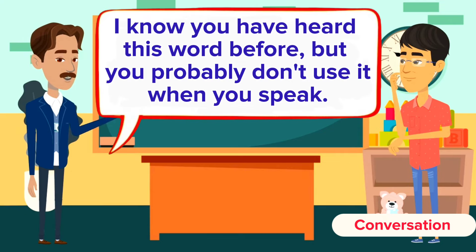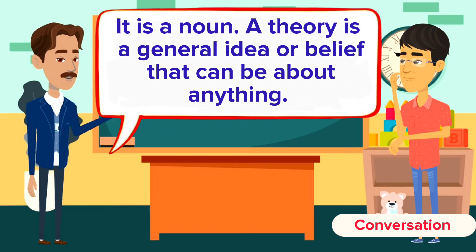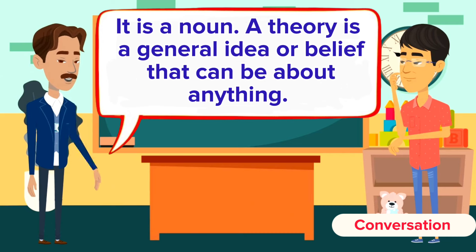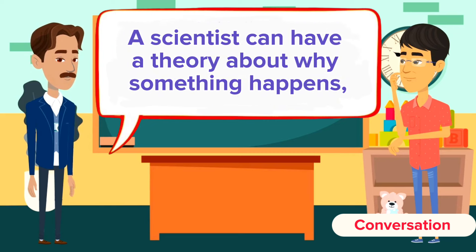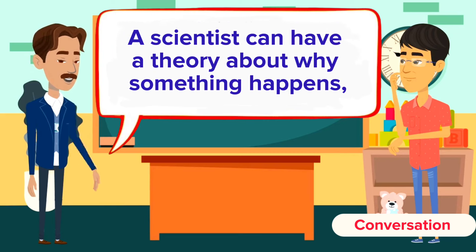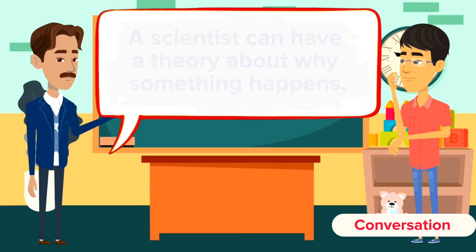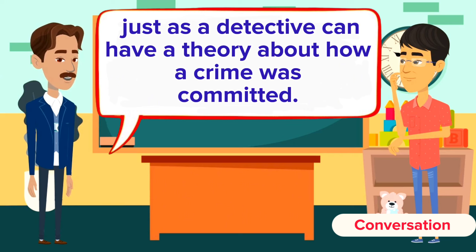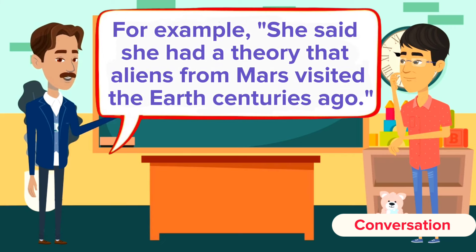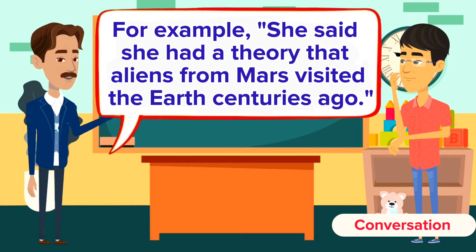What about 'theory'? I know you have heard this word before, but you probably don't use it when you speak. It is a noun. A theory is a general idea or belief that can be about anything. A scientist can have a theory about why something happens, just as a detective can have a theory about how a crime was committed. For example: she said she had a theory that aliens from Mars visited the Earth centuries ago.